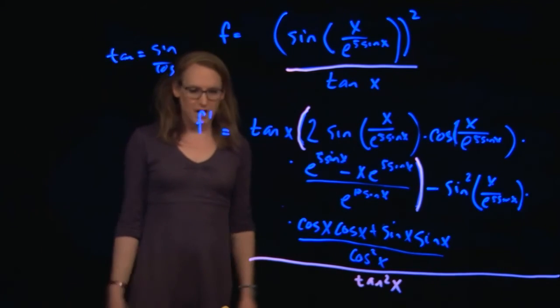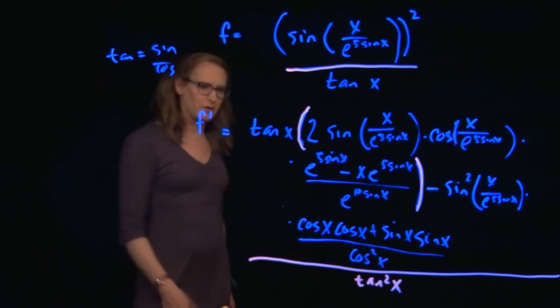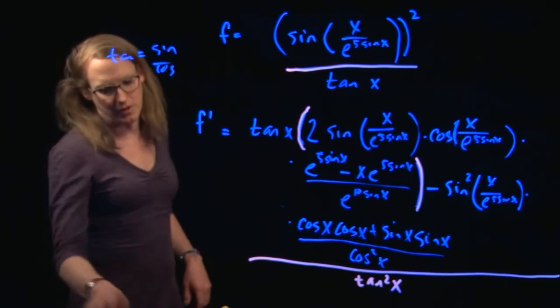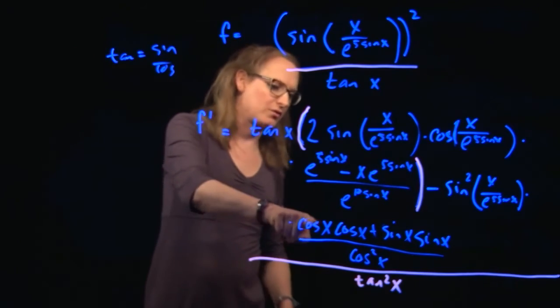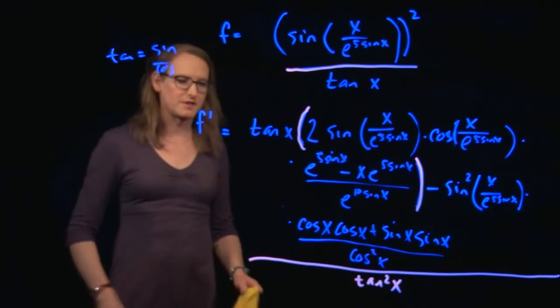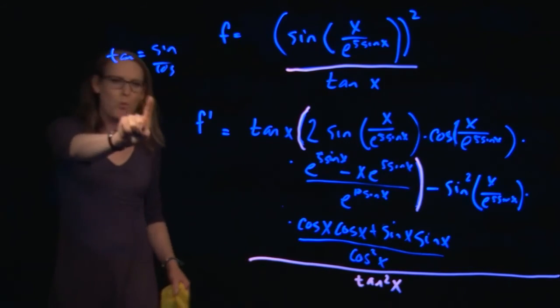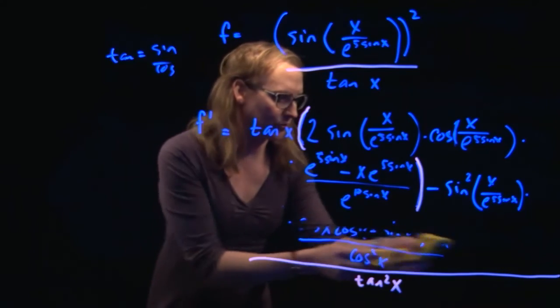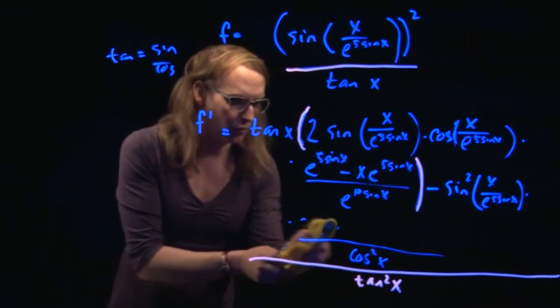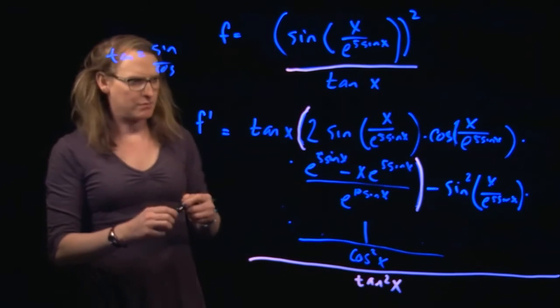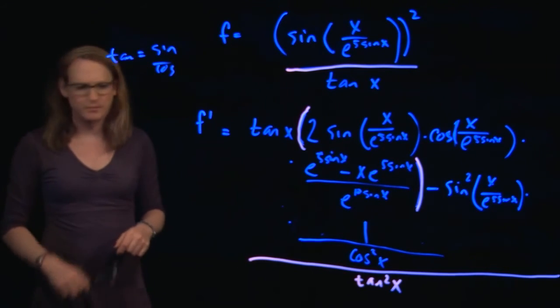So that was kind of a crazy one. If I had really wide paper, I could deal with it. There is one simplification that I want to make right now, which is that we've got cosine squared plus sine squared. And cosine squared plus sine squared is that magic number one. So I can replace that numerator with a one and make that a bit simpler.